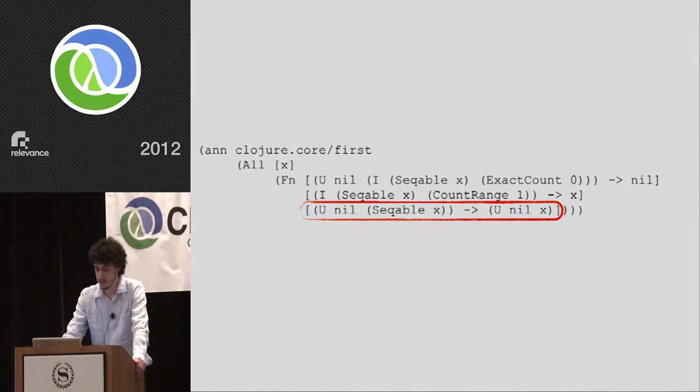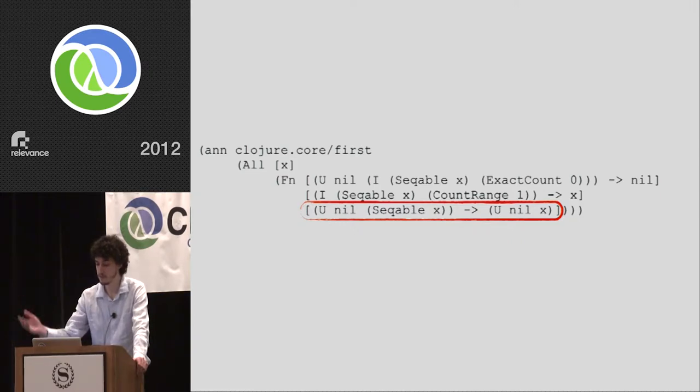The first case of the intersection type handles where we pass nil or an empty collection — a union of nil or an intersection of Seqable[X] and ExactCount[0]. If we match this, we can safely say it always returns nil. The second arity says if we have a type that's both Seqable[X] and CountRange[1] (or higher), then we always get the type X that Seqable is parameterized by. The most general type is at the bottom as a catchall — a union of nil and Seqable[X] — and the result type is the most general: a union of nil and X.